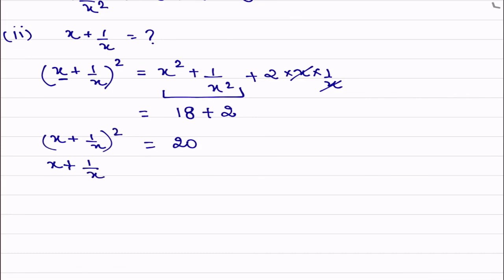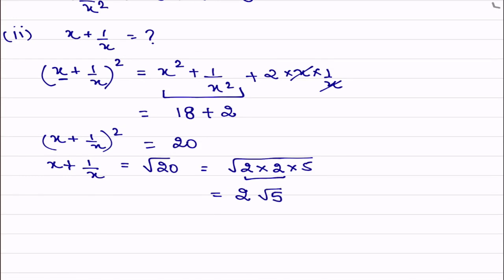Now we need to remove the square, so we take the square root on the other side. The square root of 20 — by prime factorization: 20 equals 5 into 4, which is 5 into 2 into 2. So one pair of 2 comes out, giving 2 root 5. The square root gives plus or minus, but for convenience we take the positive value: 2 root 5.